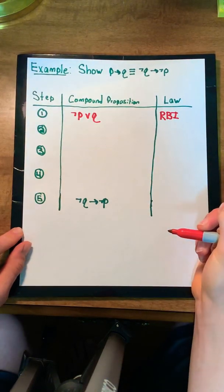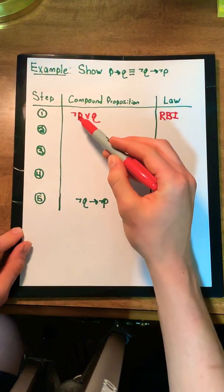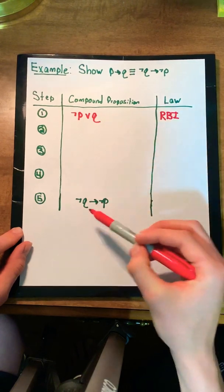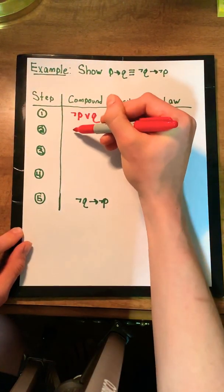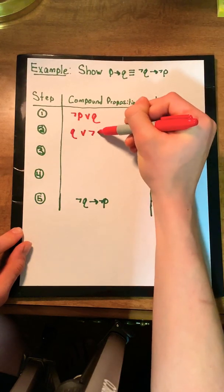Following the next step in our acronym, we know that we want to get the variables into the correct position. We want to get this P over to the right side and this Q over to the left side. Thankfully we can easily do that using commutativity. So we now have Q or not P.